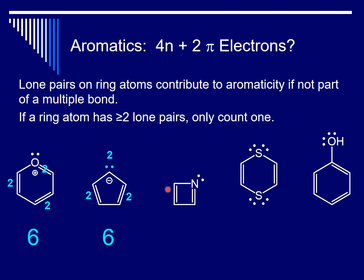The third compound is similar to the first. We disregard the lone pair on nitrogen because that nitrogen is part of a double bond and that lone pair is in an sp2 hybrid orbital. So we only count the pi electrons in the double bonds, and there are four. The fourth compound has two sulfur atoms, and each sulfur atom has two lone pairs. When a ring atom has two lone pairs, you only count one of the pairs. One of the lone pairs is in a p orbital, so we count it; the other is in an sp2 hybrid orbital, so we don't count it. Here, we have eight pi electrons. For the last compound, there is an oxygen atom with two lone pairs, but the oxygen is not a ring atom, so we disregard it. Thus, there are six pi electrons.